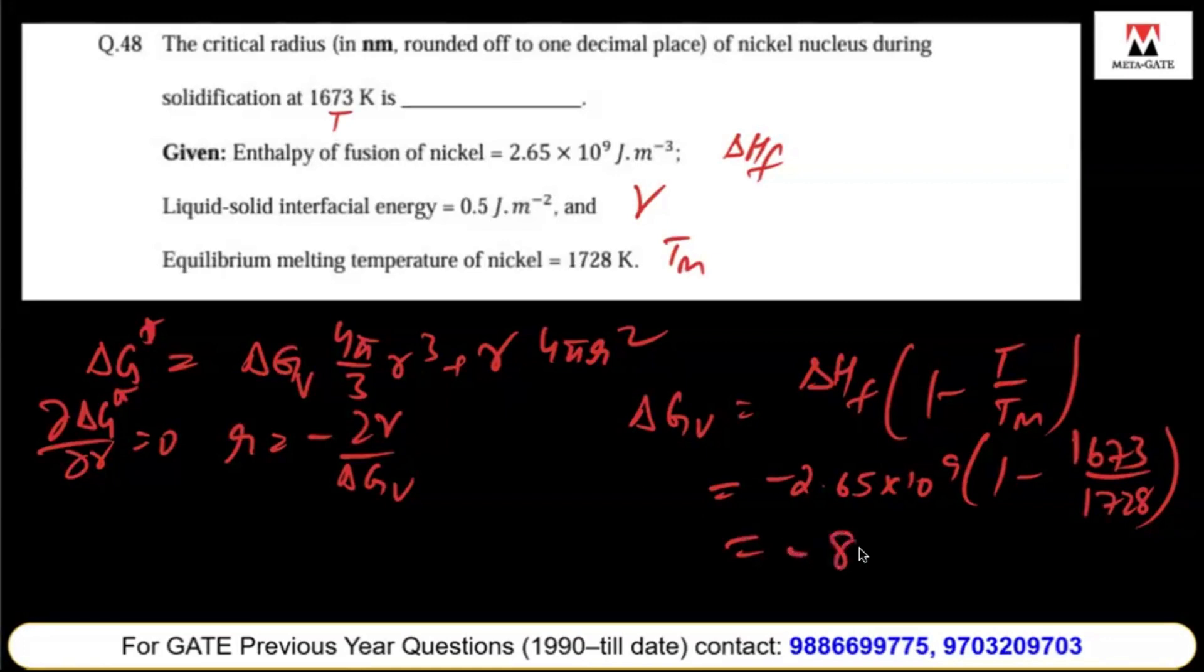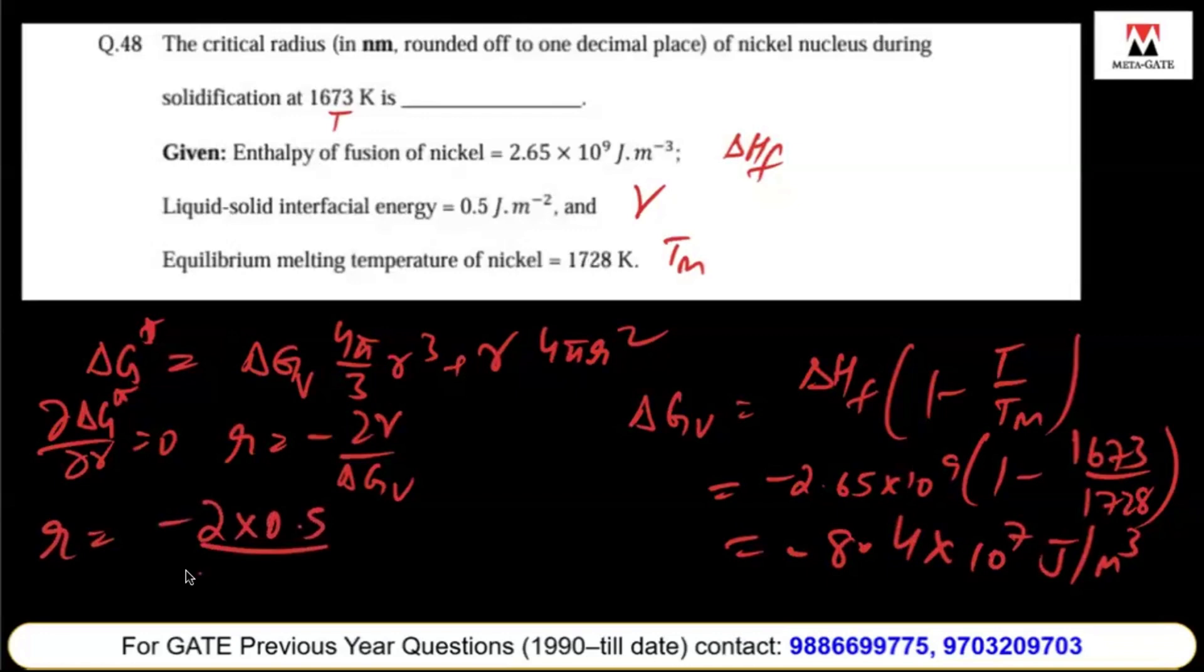So r is minus 2 times 0.5 divided by minus 8.4 times 10 to the 7, which gives 11.8 nanometers. So the answer in nanometers is 11.8. Thank you.